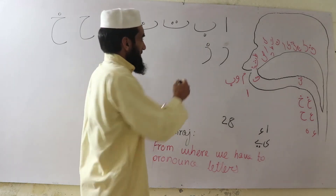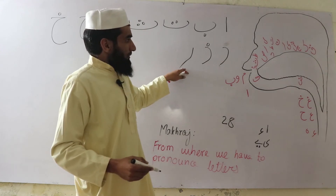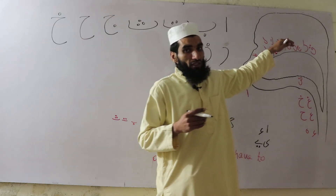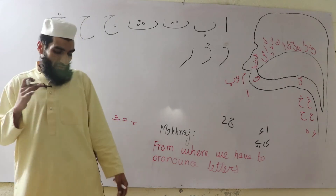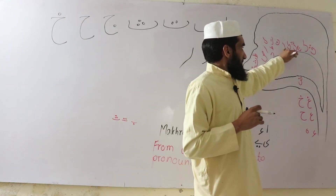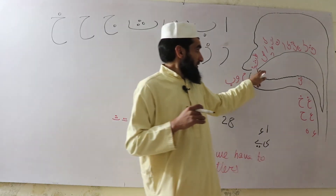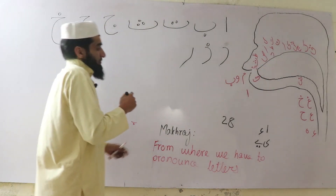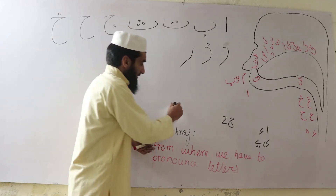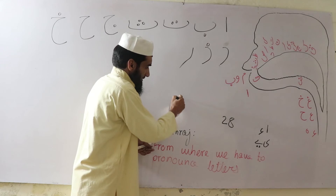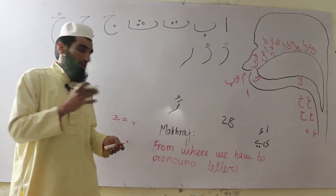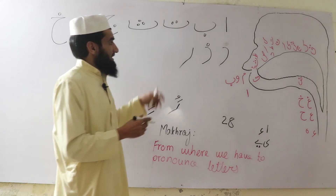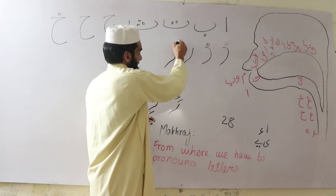Then is Ra. Its pronunciation is formed when the corner of the tongue touches the upper flat surface: Ra. Ra has basically two to three conditions — it becomes bold when it has a fatha or damma, and light when it has a kasra underneath: Rah.